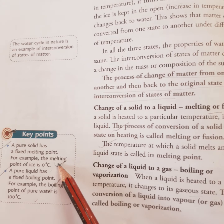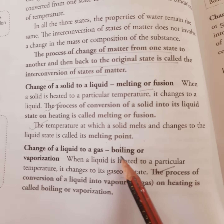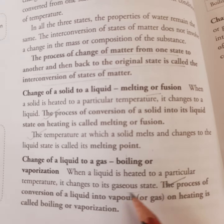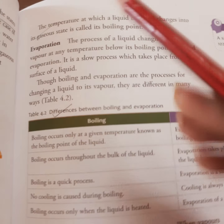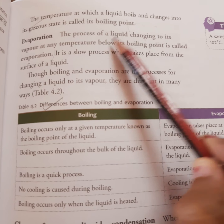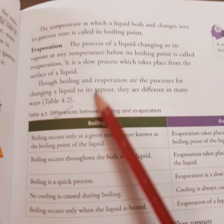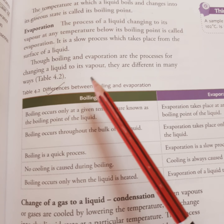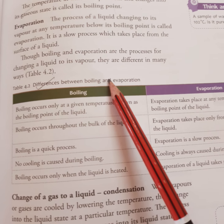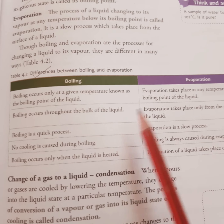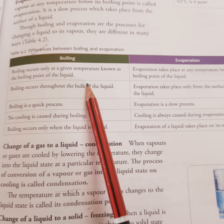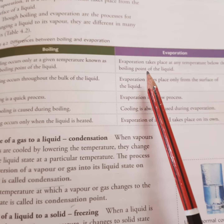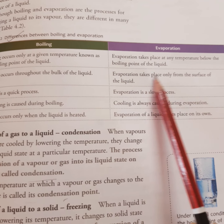Change of a liquid to a gas is called boiling or vaporization. The temperature at which a liquid boils and changes into its gaseous state is called the boiling point. Evaporation is the process by which a liquid changes into vapor at any temperature below its boiling point. Boiling occurs only at a specific temperature — the boiling point — but evaporation takes place at any temperature below the boiling point.